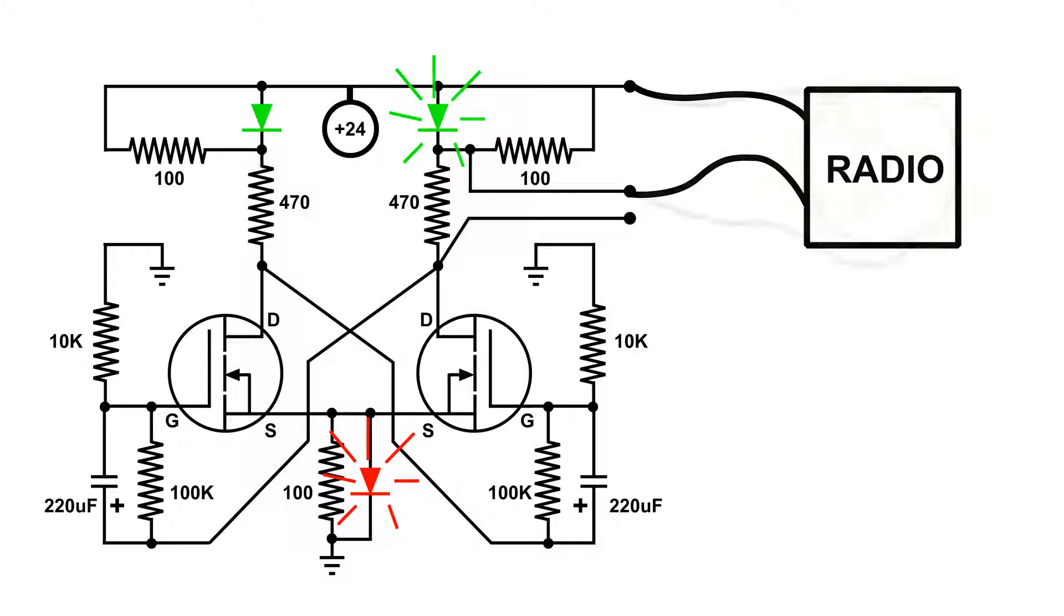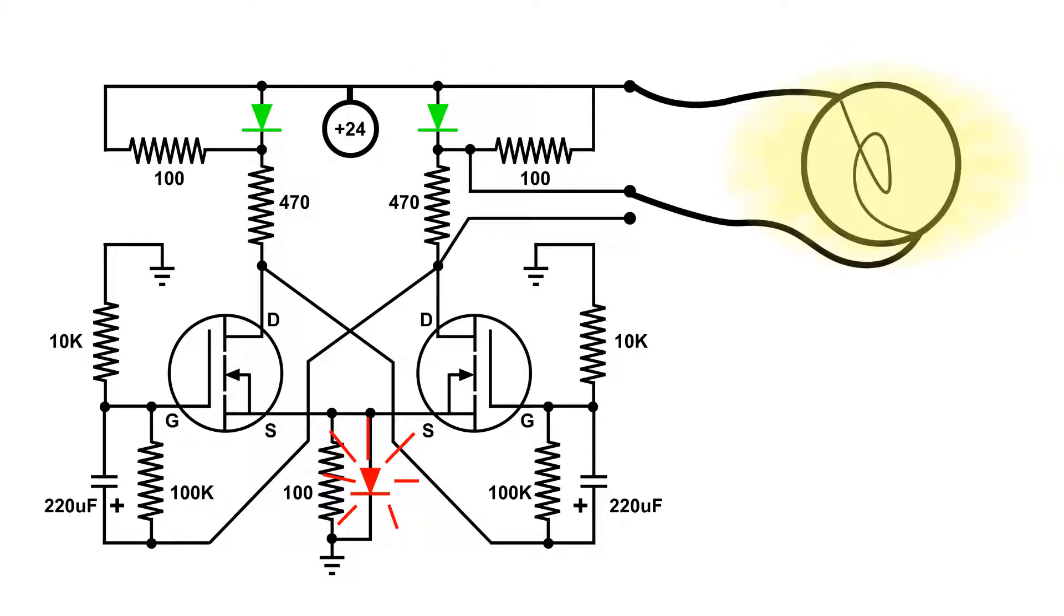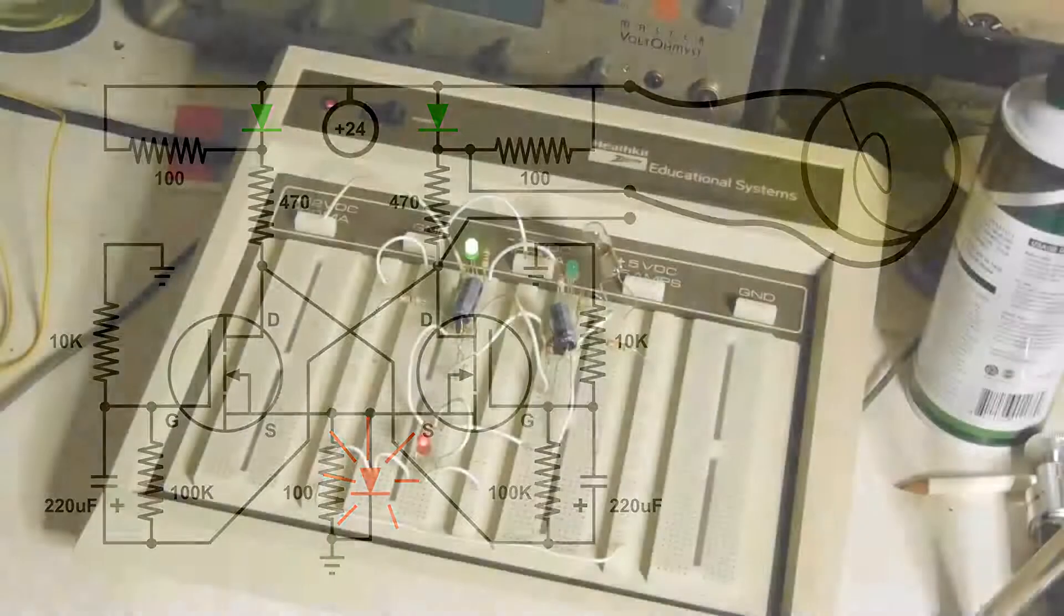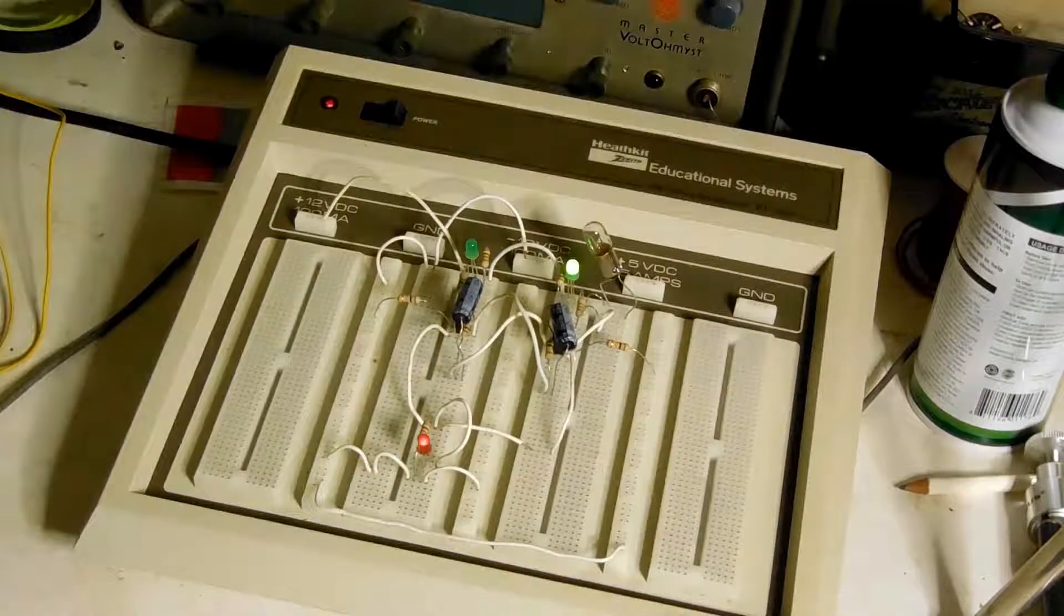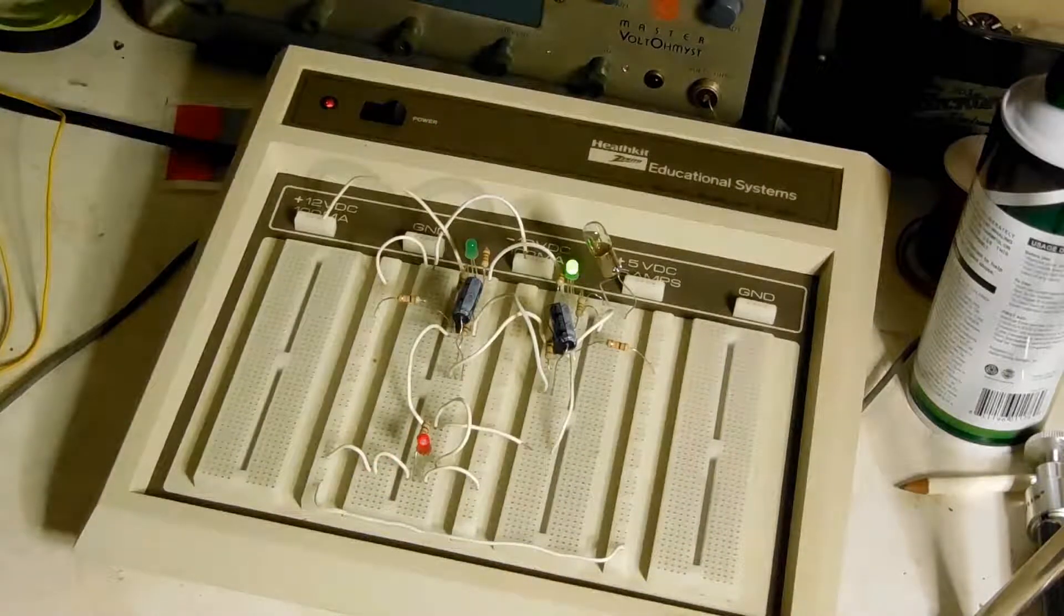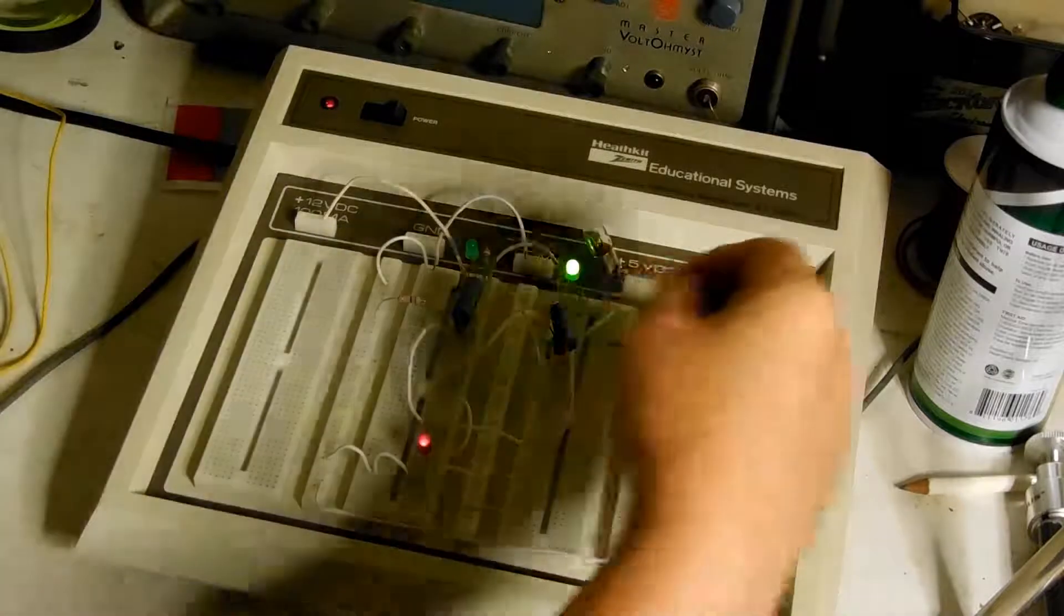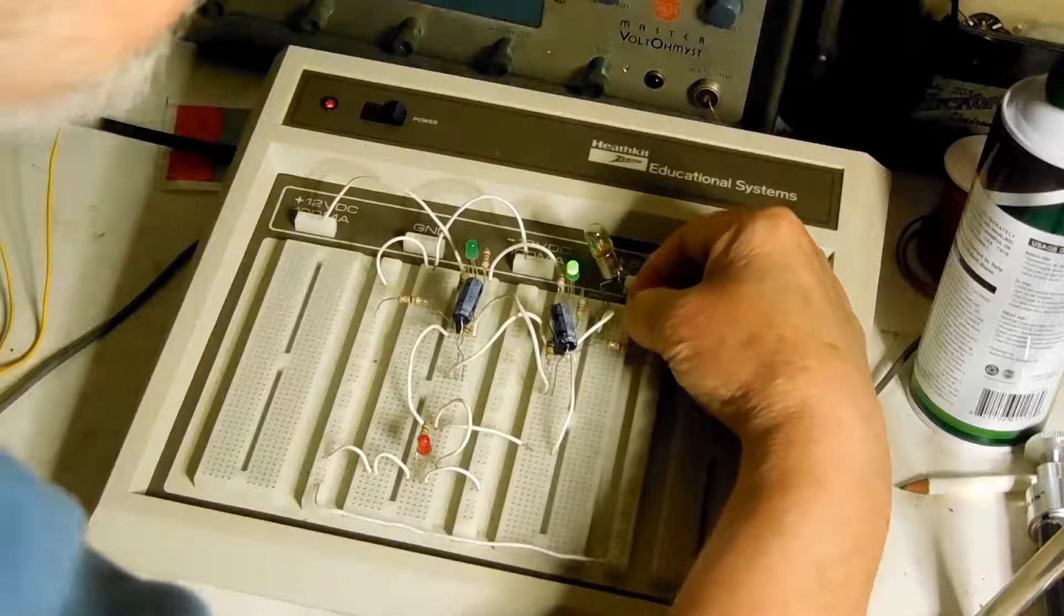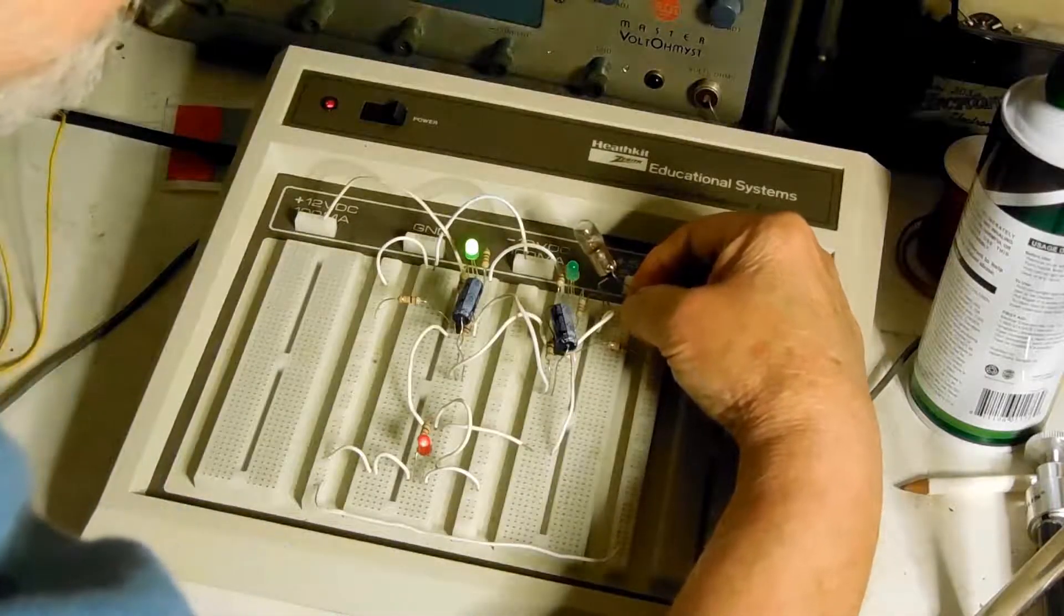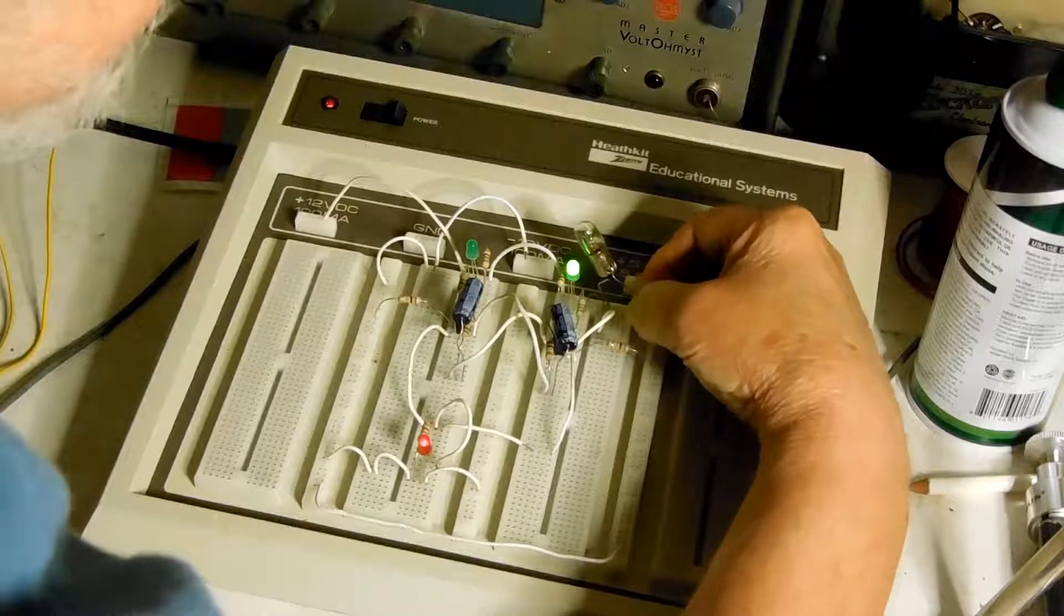Now let's see what happens when I hook up an incandescent bulb across the LED. The multivibrator is running again. And this time I'm going to hook up a 49 bulb across the right LED.